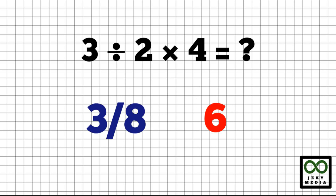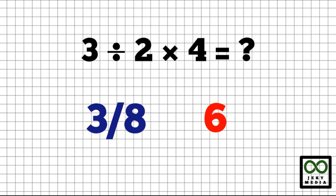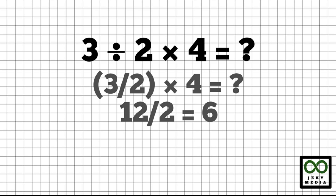Next, we have 3 divided by 2, multiplied by 4. Is it 3 eighths or 6? Let's divide 3 by 2 — the answer is 3 halves. Now let's multiply 3 halves by 4; this will become 12 over 2. Simplifying the fraction will result in 6.